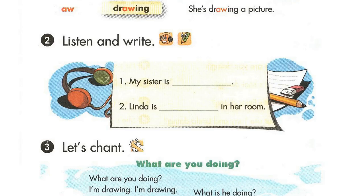Page 56. Lesson 3. Activity 2. Listen and write. 1. My sister is reading. 2. Linda is drawing in her room.